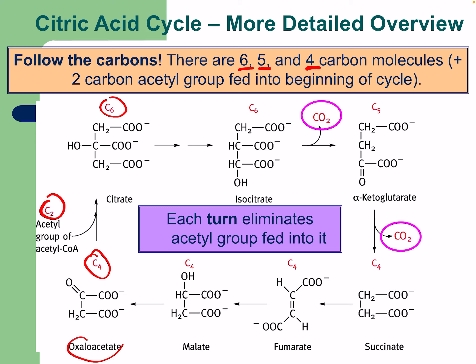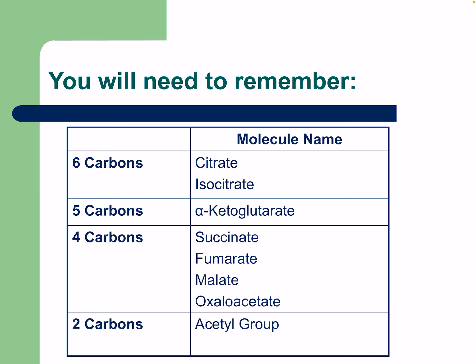The two-carbon acetyl group of acetyl-CoA combines with the four-carbon oxaloacetate to form citrate. We then lose a carbon going to alpha-ketoglutarate, and another carbon going from alpha-ketoglutarate to succinate. The six-carbon molecules are citrate and isocitrate; the five-carbon is alpha-ketoglutarate; four-carbon molecules include succinate, fumarate, malate, and oxaloacetate; and the two-carbon molecule is the acetyl group on acetyl-CoA.